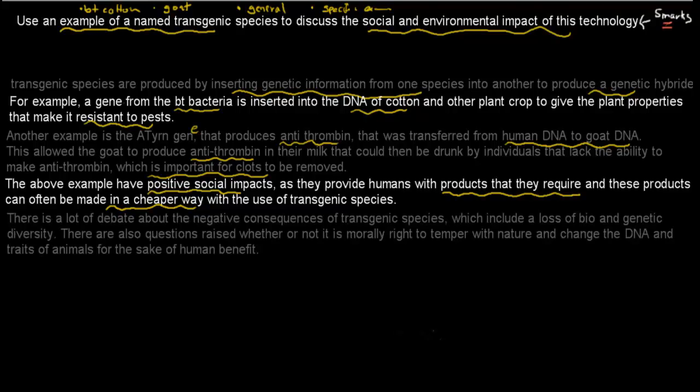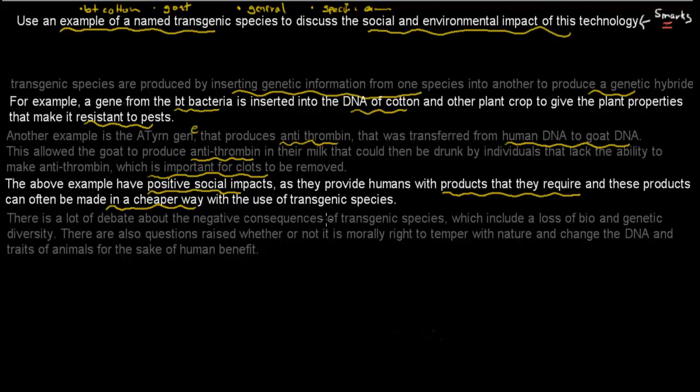Now I go into the negative ones. There's a lot of debate about the negative consequences of transgenic species, which include a loss of biodiversity and genetic diversity. There's also a question raised whether it's morally right to tamper with nature and change the DNA traits of animals for the sake of human benefit. The negative consequence would be: Is it morally right? Should we be allowed to do that?